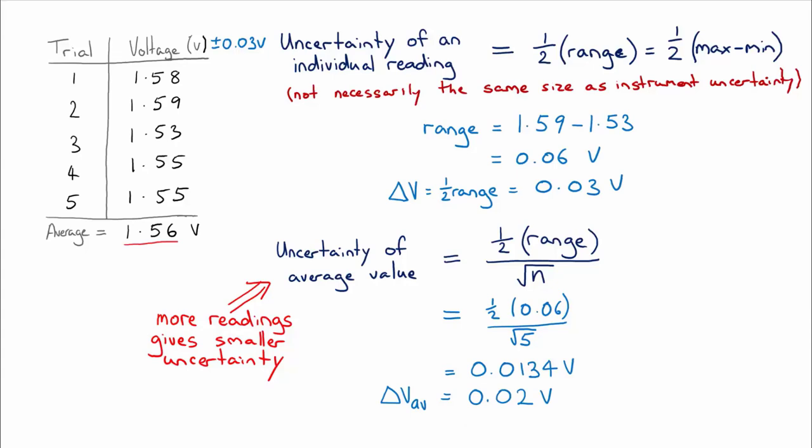And I'm just going to, over here, give our final answer. So our voltage is the average value that we got, plus or minus the uncertainty, 0.02. And that would be our final answer.